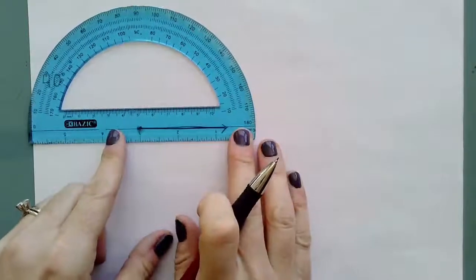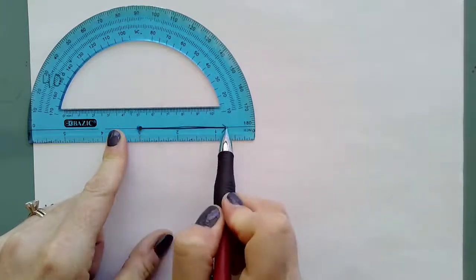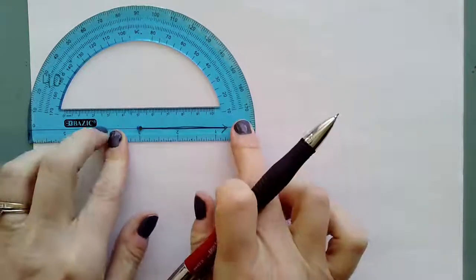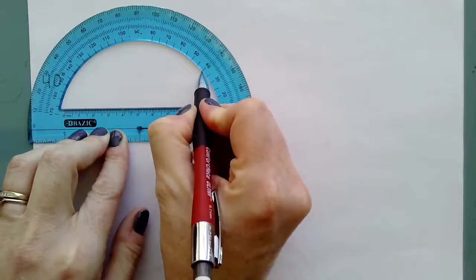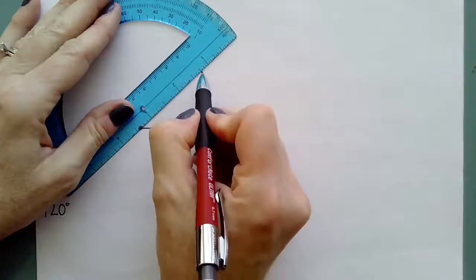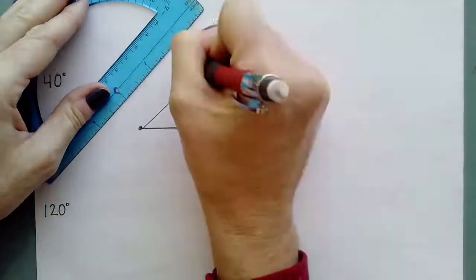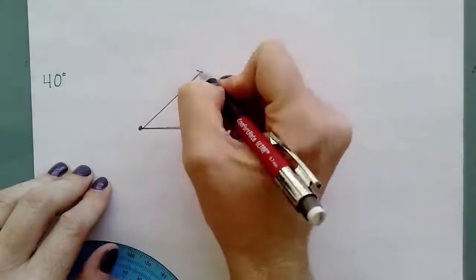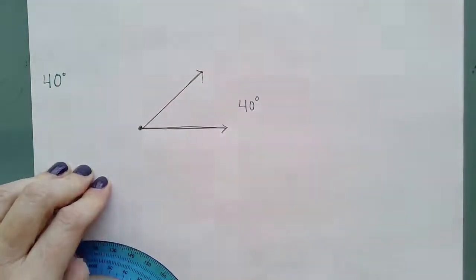And I'm going to line up that center mark with my vertex and line up my ray with my zero edge. And then I'm going to find that 40 degrees here on the inner mark. And so I made a dot there and now I'm going to connect my vertex with the dot that I made. And so now I know that this angle is 40 degrees.